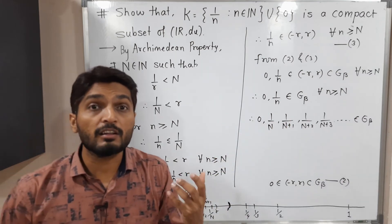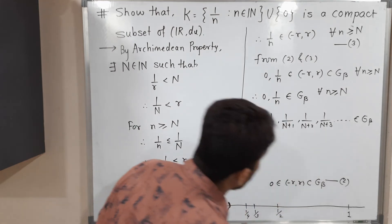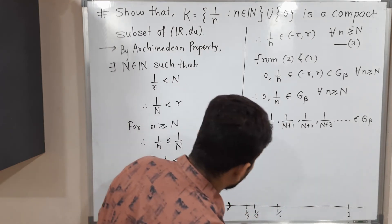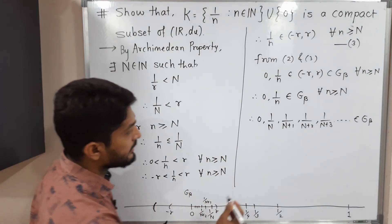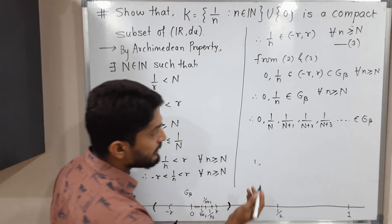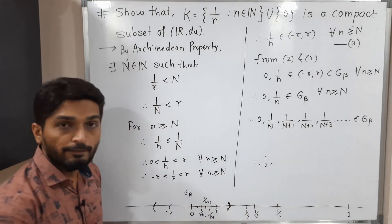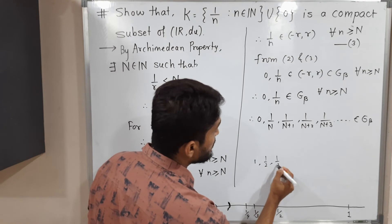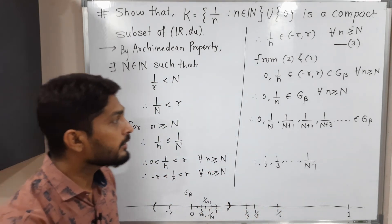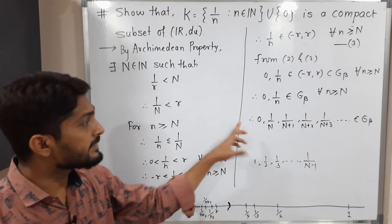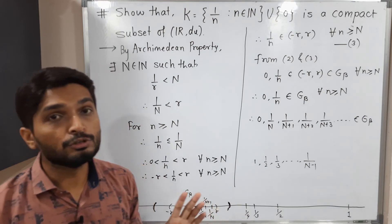Let us find which elements are left — which are not covered by G_β. The remaining elements are: 1, 1/2, 1/3, and so on up to 1/(N−1). All these elements are in K, and since {G_α} is an open cover of K, each of these elements must be covered by some G_α.